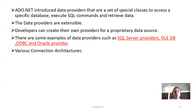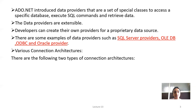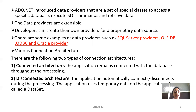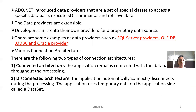There are two types of main connection architectures. The first is connected architecture, where the application remains connected with the database throughout the processing. The second is disconnected architecture, where the application automatically connects and disconnects. During processing, the application uses temporary data on the application side, which is called a dataset.